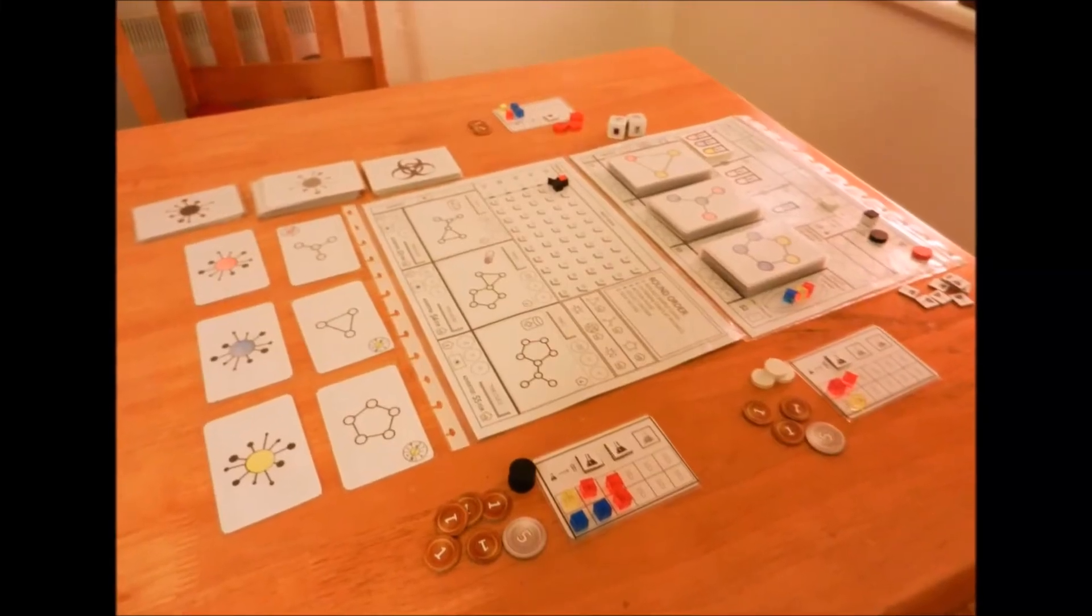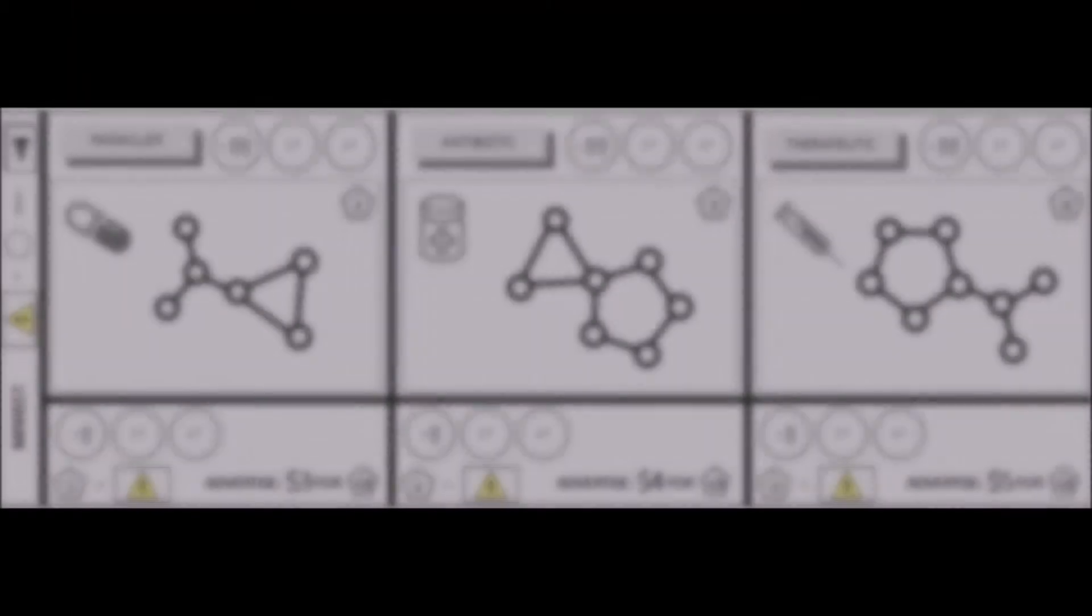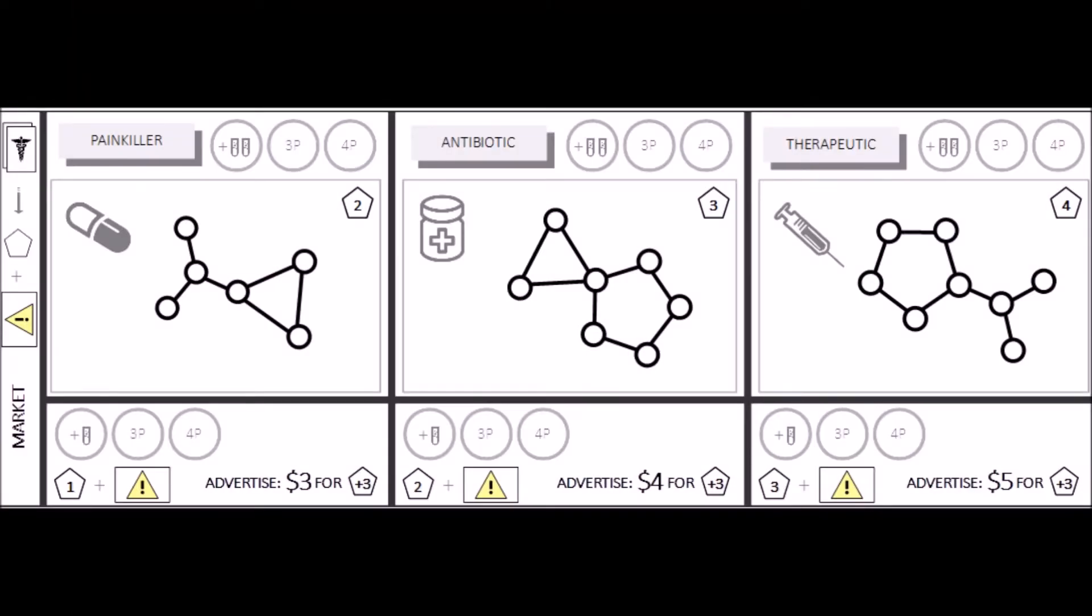In Panacea, you take on the role of a pharmaceutical company that sells three different types of drugs: painkillers, antibiotics, and therapeutics to the market.